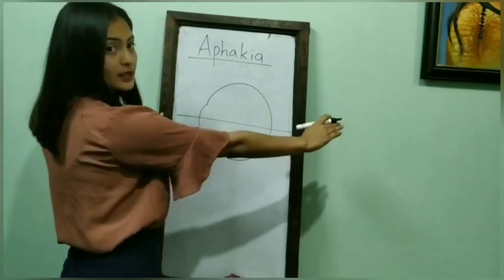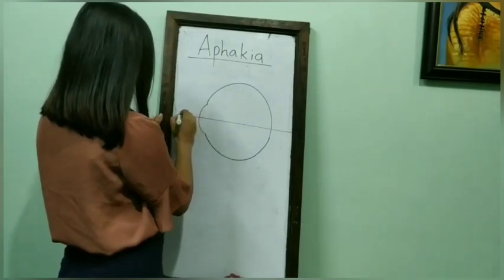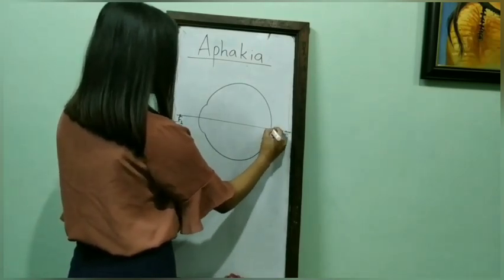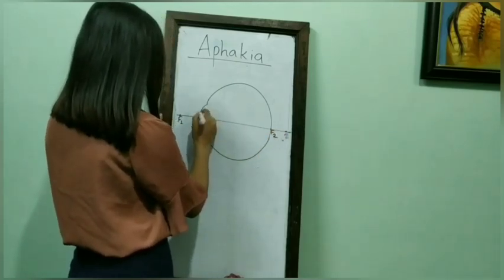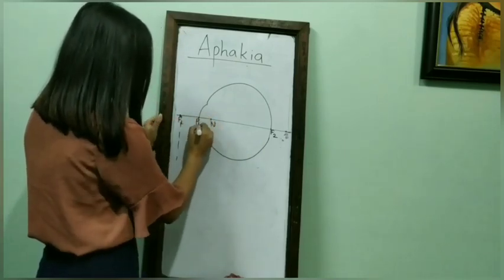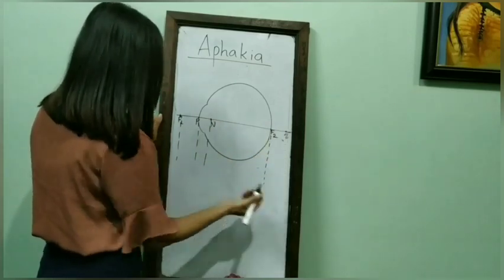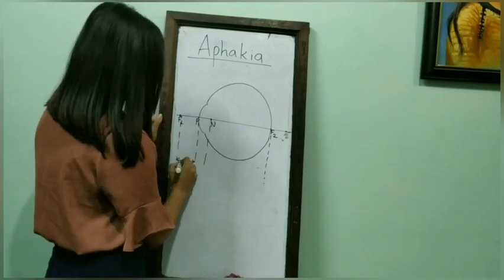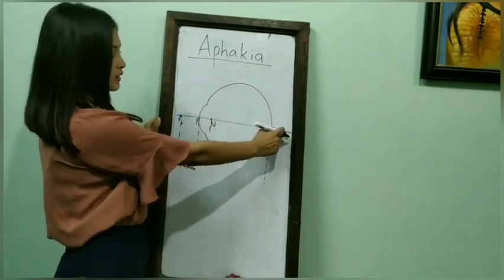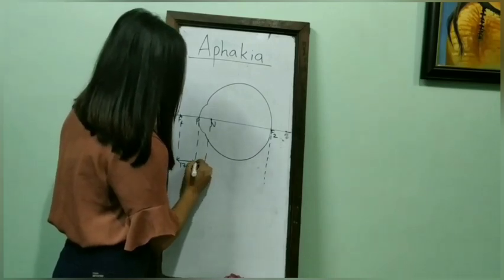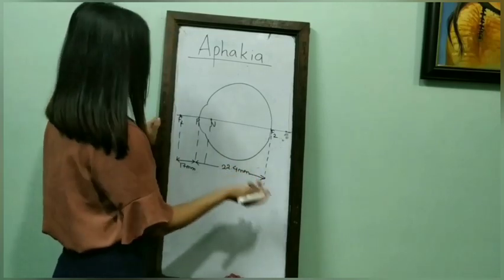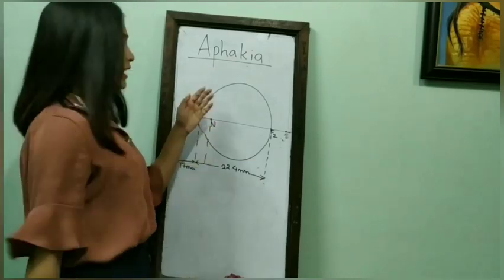This is the principal axis, and this is the principal focus F1 and F2. This is the principal point and this will be the nodal point. So the normal cardinal data of the eye: the anterior focal point will be around 17 mm, and the posterior focal point will be around 22.4 mm behind the anterior surface of the cornea. These are the normal cardinal data of the eye.